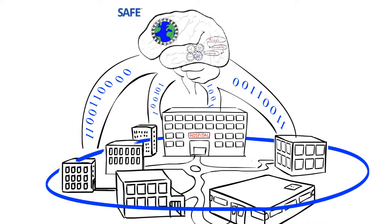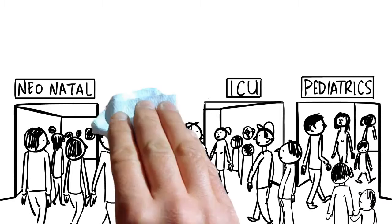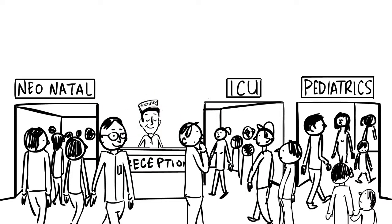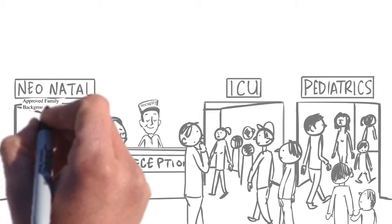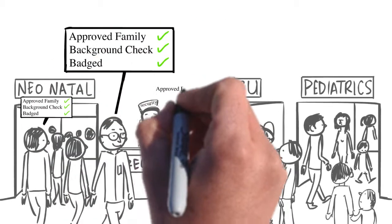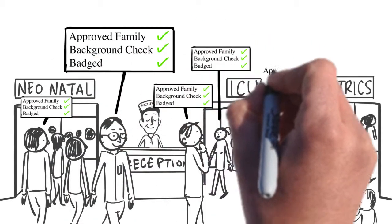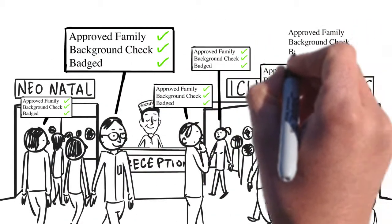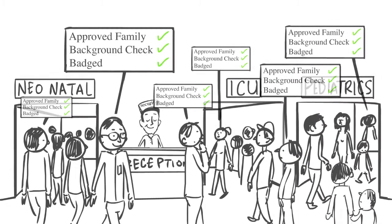SAFE automates the manual processes associated with managing visitors, watchlist checks, and access provisioning, and connects approved friends and family with patients via electronic healthcare record systems like Epic or Cerner. SAFE also standardizes your security policies across your healthcare facilities.